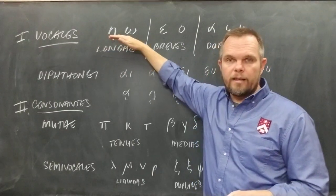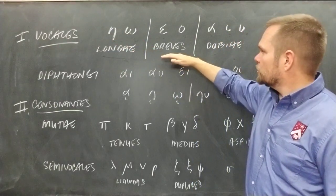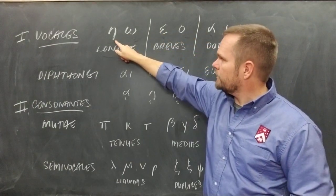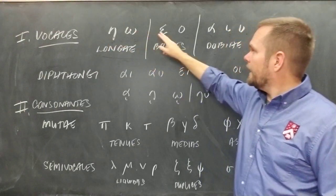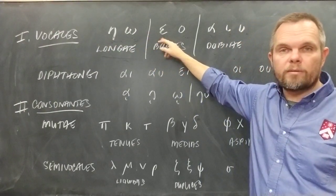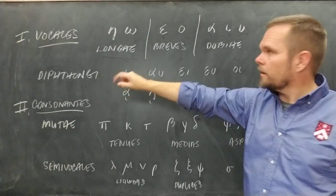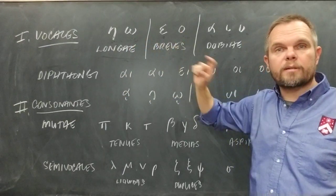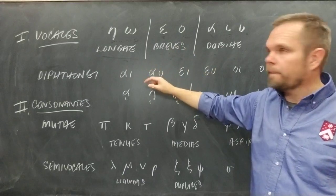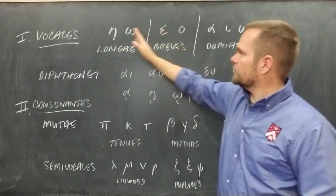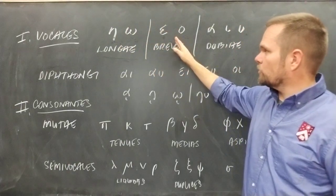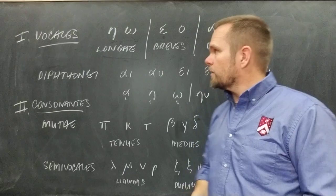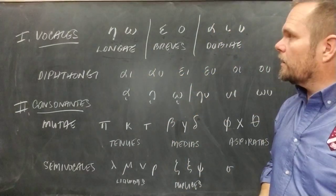The long vowels are eta and omega. The short vowels are epsilon and omicron. Notice that these correspond — eta and epsilon share the E sound, same sound but different length. Omega and omicron share the O sound, same sound but different length. These are the long sounds; these are the short sounds. Alpha, iota, and upsilon can be long or short in different words. That's the division of the vowels.